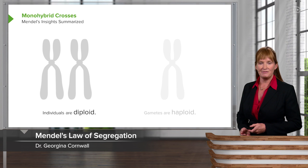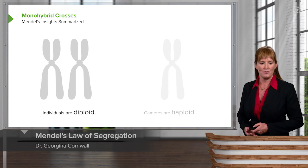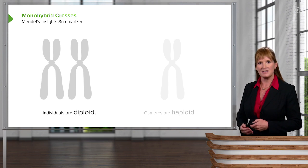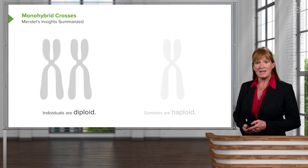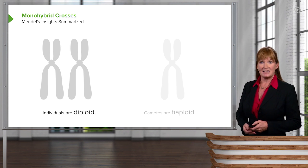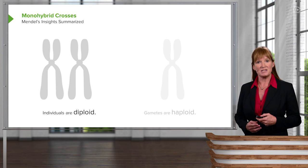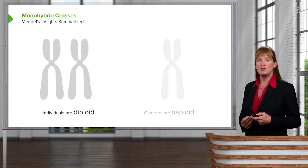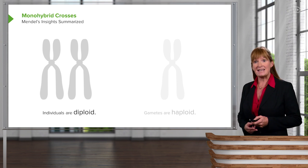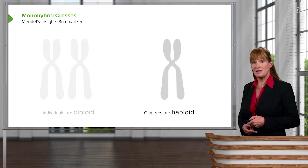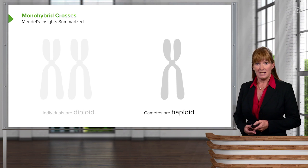Mendel gained a number of different insights from his work with monohybrid crosses — that is, looking at just one trait. First of all, he assessed that an individual must be diploid, meaning it must carry two alleles for the same trait, and that gametes probably only carry one of those alleles.